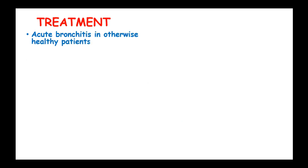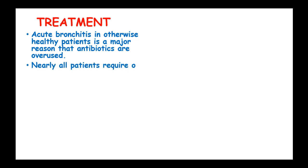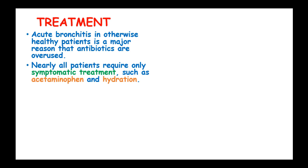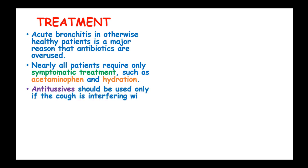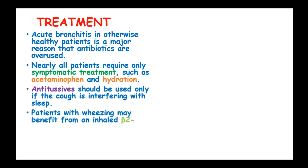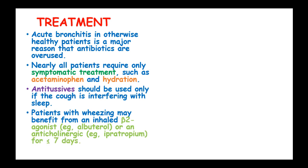Treatment of acute bronchitis in healthy patients is a major reason that antibiotics are overused. Nearly all patients require only symptomatic treatment such as acetaminophen and hydration. Antitussives should only be used if cough is interfering with sleep. Patients with wheezing may benefit from inhaled beta-agonists such as albuterol or an anticholinergic such as ipratropium for 7 days or less.